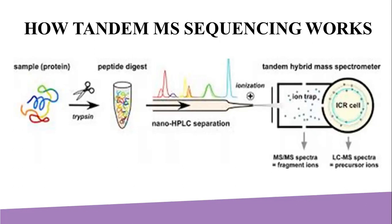Precursor ion scanning refers to monitoring for a specific loss from the precursor ion; the first and second mass analyzers scan across the spectrum partitioned by a user-defined m/z value. This experiment is used to detect specific motifs within unknown molecules. Another type of tandem mass spectrometry used for radiocarbon dating is accelerator mass spectrometry (AMS), which uses very high voltage—usually in the megavolt range—to accelerate negative ions into a tandem mass spectrometer.